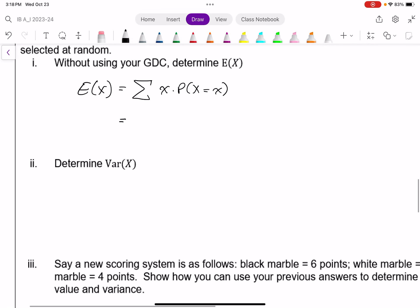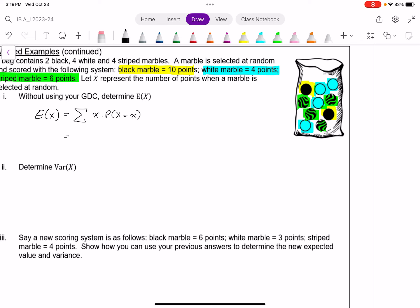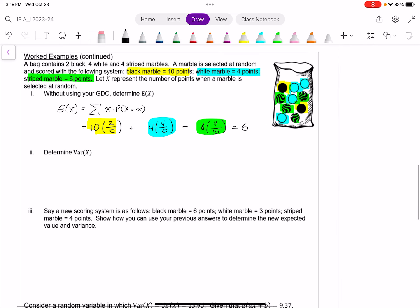So in this case, my outcomes are three of them. One is retrieving a black marble, which in terms of points is 10. The probability of that is 2 out of 10, or 1 fifth. Plus, do the same for all of them. Next, I'll look at the white marbles. Each of those is worth 4 points, and there is a 4 in 10 probability of that being selected. So it's 4 times 4 in 10. Plus, my striped marbles. Each of those is worth 6 points, and the probability is also 4 in 10. Multiply this out, you get exactly 6. So 6 essentially is, if we were to repeat this over and over again, we would expect, on average, the number of points to get closer and closer to 6.